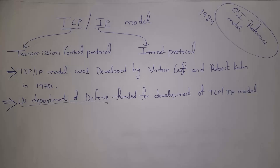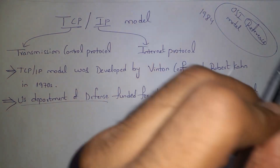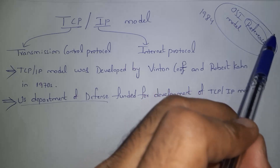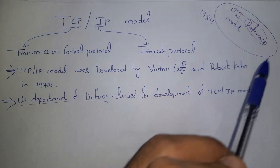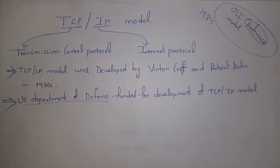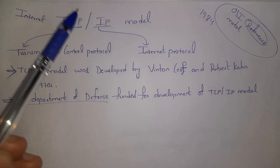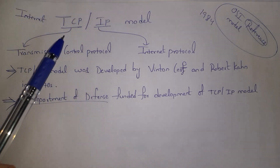The OSI model is a reference model. By seeing this reference model, we can clearly understand how a device will communicate in a network — so it is a theory concept and is not implemented anywhere. The TCP/IP model, on the other hand, is not a reference model.